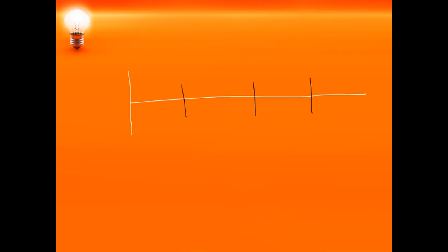Now for each section we need to have one circuit breaker — at one location, one location, one more, and one more. This is near the source end. So this is D, this is C, this is B, and this is A. You have four sections, meaning each section needs to have one circuit breaker. A radial feeder can have circuit breakers in this pattern.